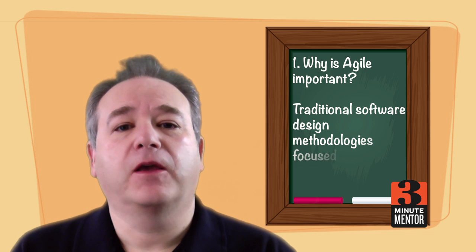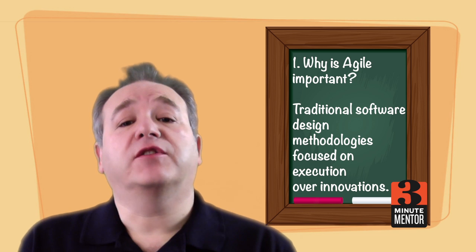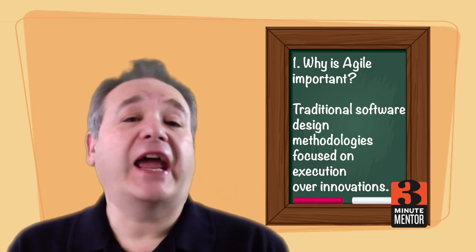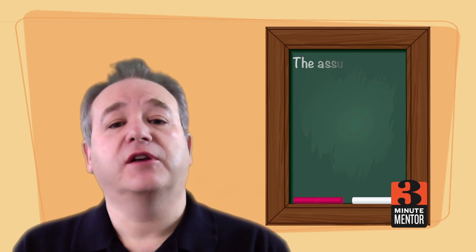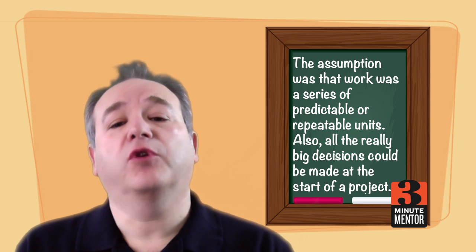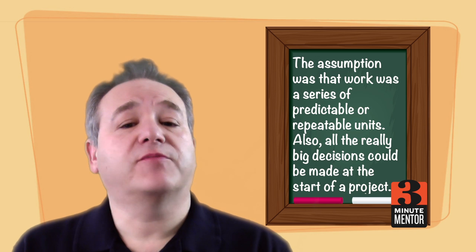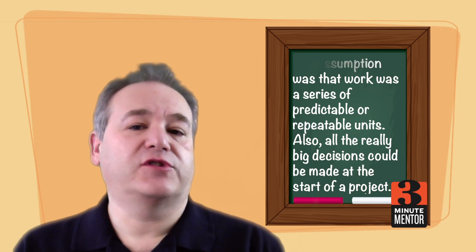Why is agile important? Traditional software design methodologies focused on execution over innovation because they were based fundamentally on the same ideas that Henry Ford used to build cars. The assumption was that work was a series of predictable or repeatable work units. Another assumption is that we can make all the really big decisions right at the start of the project. In today's world, however, we often know less at the start of a project than we would after doing some of the development.